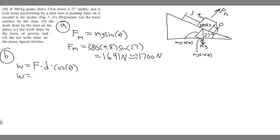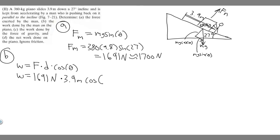The force the man exerts is 1,691 newtons, calculated in part (a). The distance is 3.9 meters. For the angle: the man's force points back up the incline, but the piano travels down the incline — they are in exactly opposite directions, so the angle between them is 180 degrees.